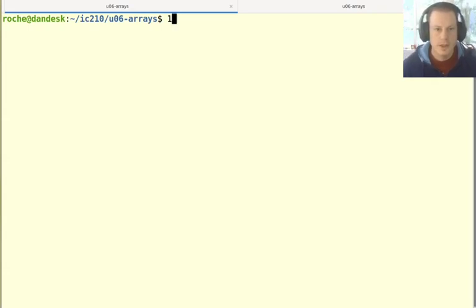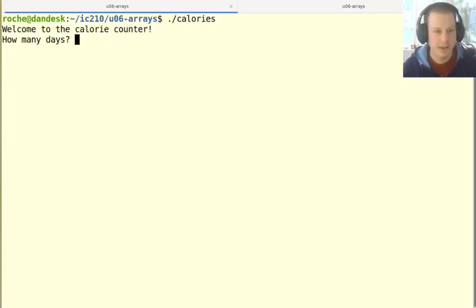So to understand two-dimensional arrays, I want to look at an example, which is something about calorie counting. So this is going to ask me how many days am I counting calories for and how many meals per day. So I'll say three meals.